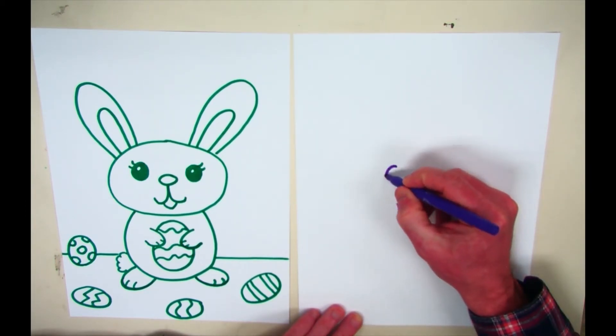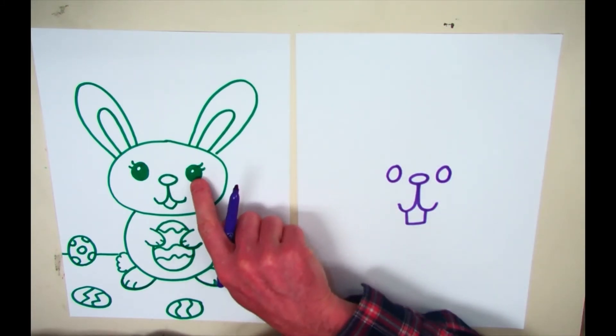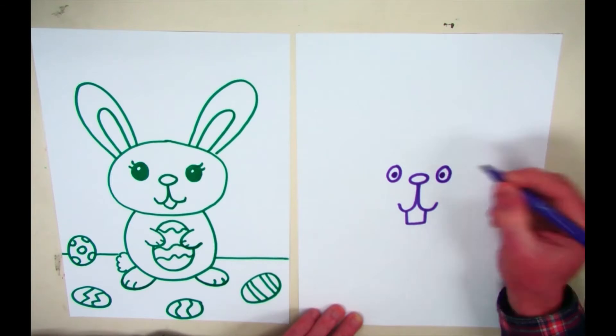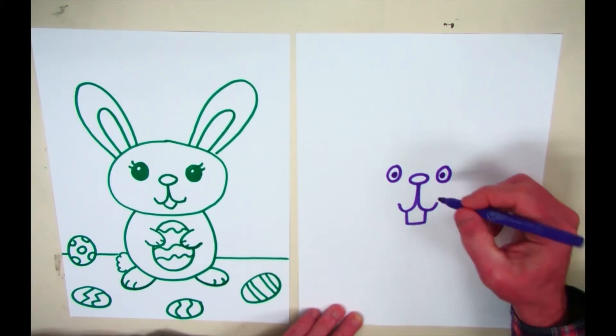For the eyes, you can decide what kind you want. This has little reflections in it and eyelashes. I'm going to make this one a little different. He's cute.